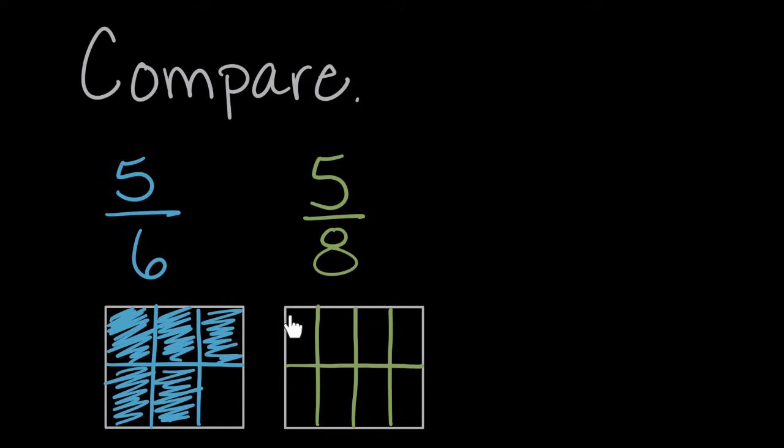These pieces, these eighths, one eighth is smaller than a sixth, because this time we had to split the cake between eight people. So we got smaller pieces. Now again, we can shade five of them. Seems like five pieces might be equal to five pieces, but we can look and see, four, five.